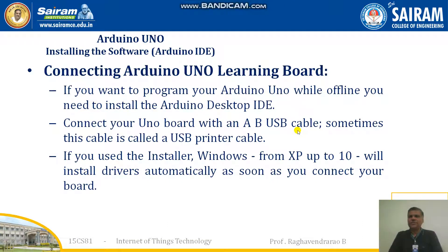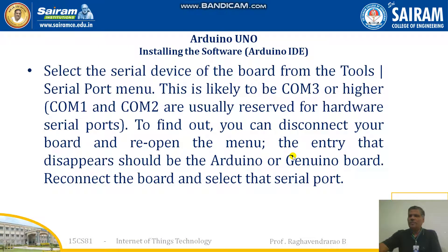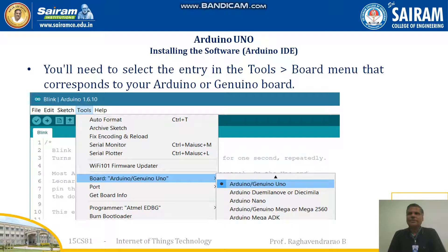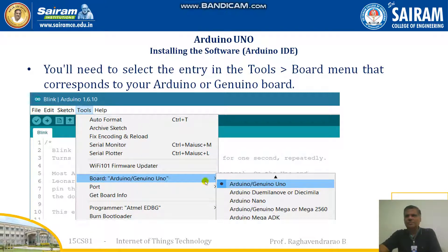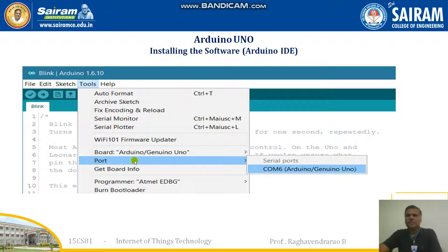From the desktop ID to the Arduino board, you have to connect using this USB printer cable. If you use the installer on Windows from XP up to version 10, it will install drivers automatically as you connect to your board. You need to select the entry in the Tools board menu that corresponds to your Arduino board. Then select the port — in this case it is COM6.